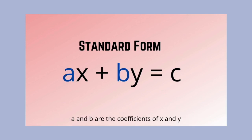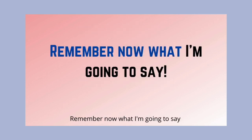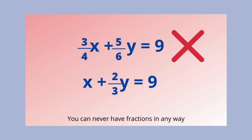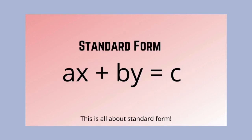A and B are the coefficients of x and y. The slope is negative a over b. Remember: you can never have fractions. A cannot be negative, and A and B can't both be zero. This is all about standard form.